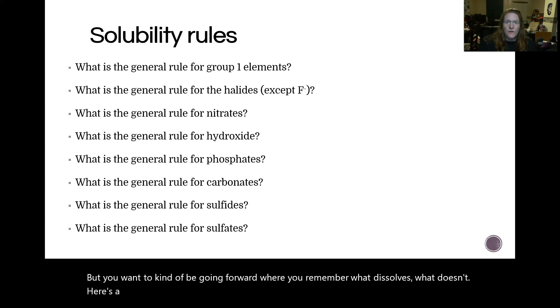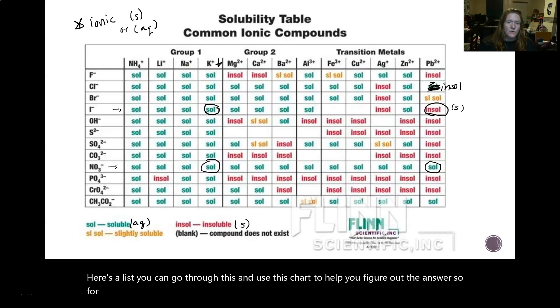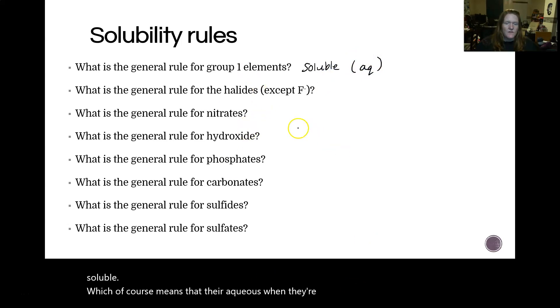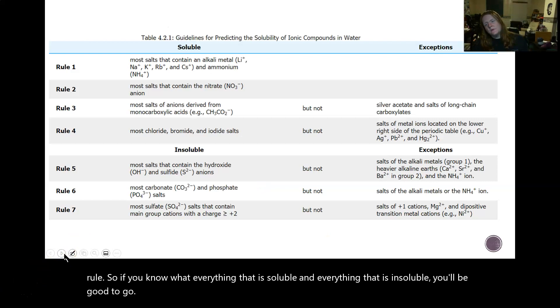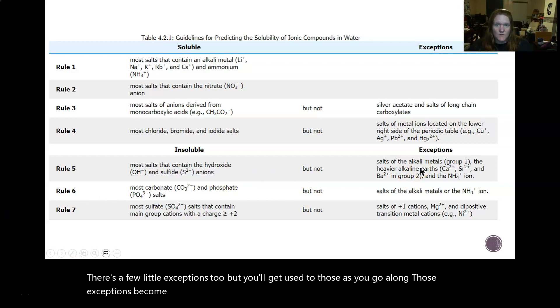Here's a list. You can go through this and use this chart to help you figure out the answers. So for example, we already kind of looked at one of the group one elements, which is potassium. But in general, they're all soluble. So you can put a conclusion here. It's all soluble, which of course means that they're aqueous when they're reacting. So find the general rules. So if you know what everything that is soluble and everything that is insoluble, you'll be good to go. There's a few little exceptions too, but you'll get used to those as you go along. Those exceptions become really important in Gen Chem 2. So it's good to start learning those now.